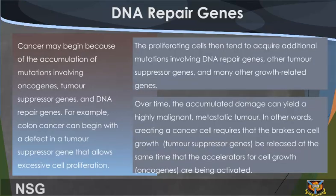Cancer may begin because of the accumulation of mutations involving oncogenes, tumor suppressor genes, and DNA repair genes. For example, colon cancer can begin with a defect in a tumor suppressor gene that allows excessive cell proliferation. The proliferating cells then tend to acquire additional mutations involving DNA repair genes, other tumor suppressor genes, and many other growth-related genes. Over time, the accumulated damage can yield a highly malignant, metastatic tumor. In other words, creating a cancer cell requires that the brakes on cell growth — tumor suppressor genes — be released at the same time that the accelerators for cell growth — oncogenes — are being activated.